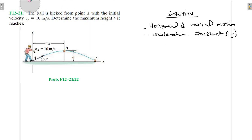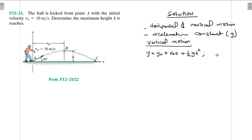For vertical motion we are going to be using three equations of motion: y_final = y₀ + v₀t + ½g·t², where g = −9.81 m/s²; v_final = v₀ + g·t; and the derived equation v_final² = v₀² + 2g(y_final − y₀).